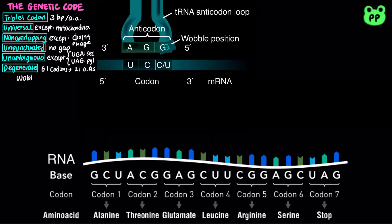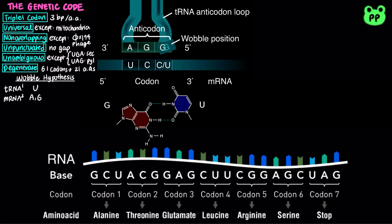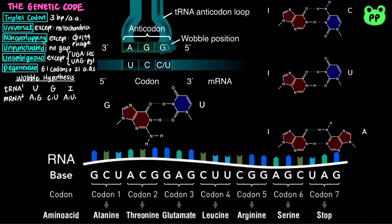This is explained by the Wobble hypothesis, which states that the third base in an mRNA codon can undergo non-Watson-Crick base pairing with the first base of a tRNA anticodon. Uracil can base pair with adenine and guanine. Guanine can base pair with cytosine and uracil, and inosine can base pair with adenine, uracil, and cytosine. Cytosine and adenine can only recognize codon bases of guanine and uracil respectively.